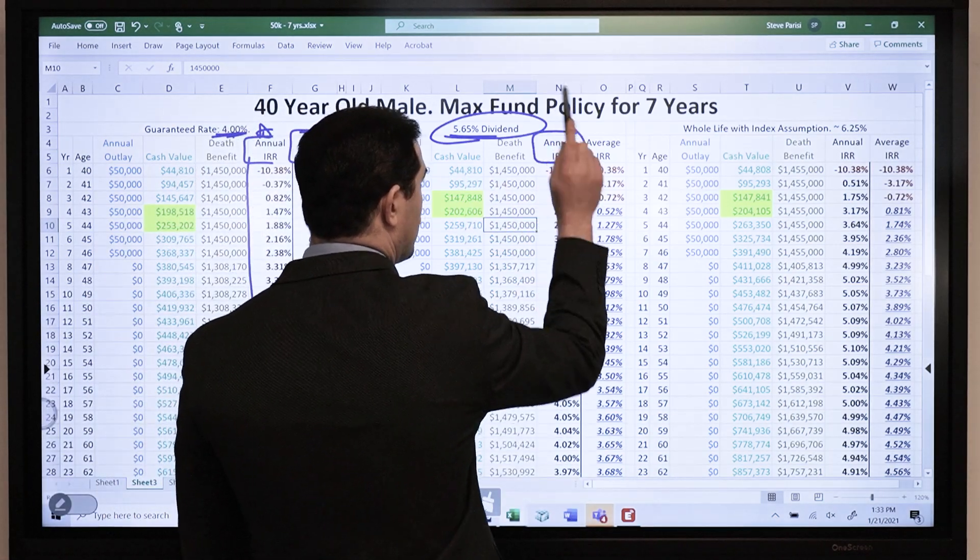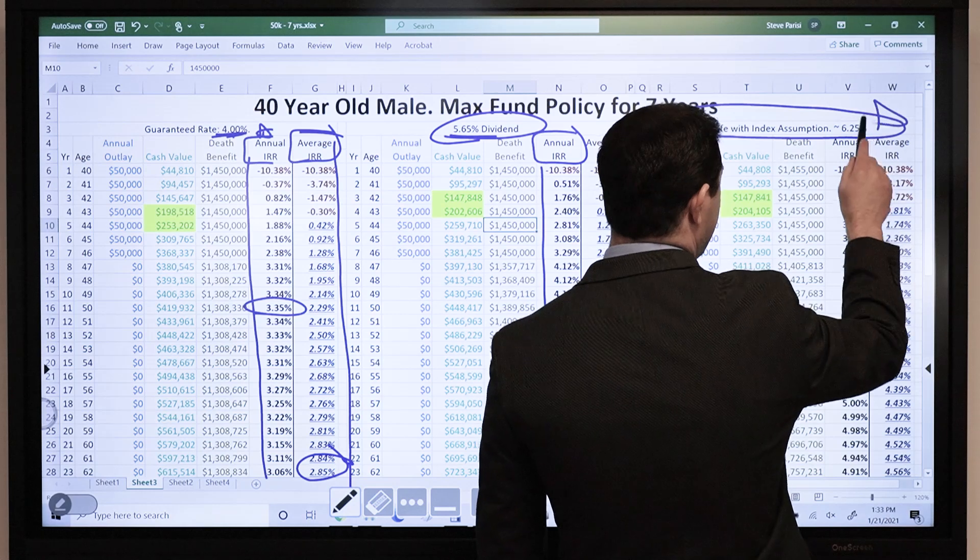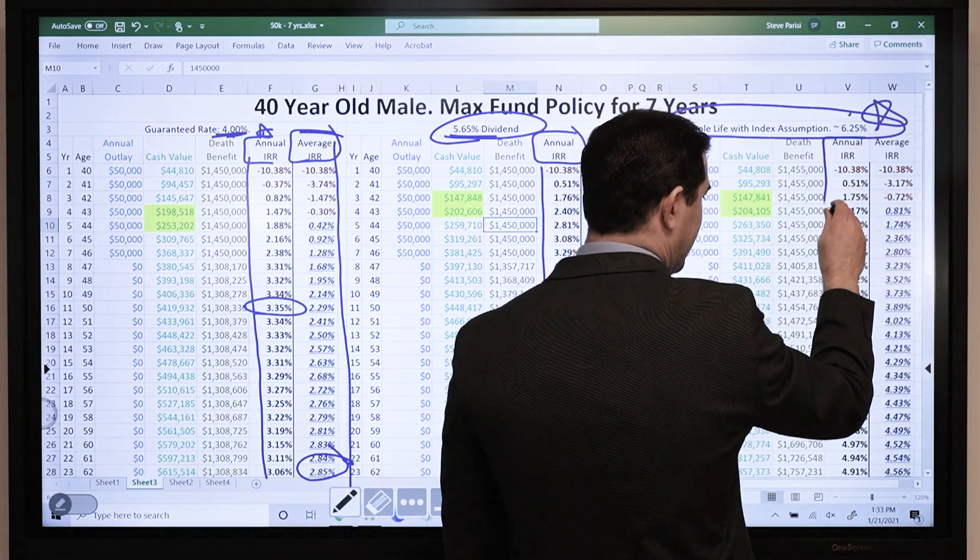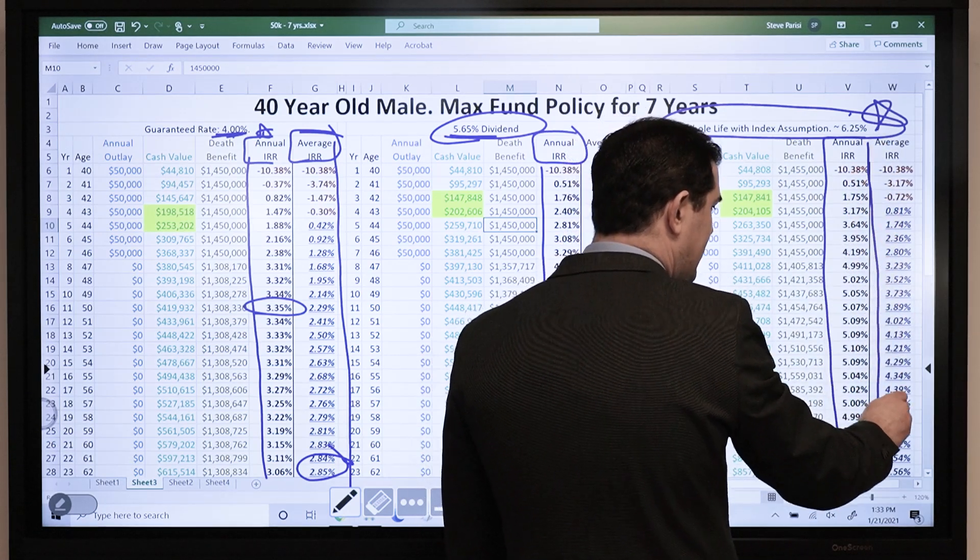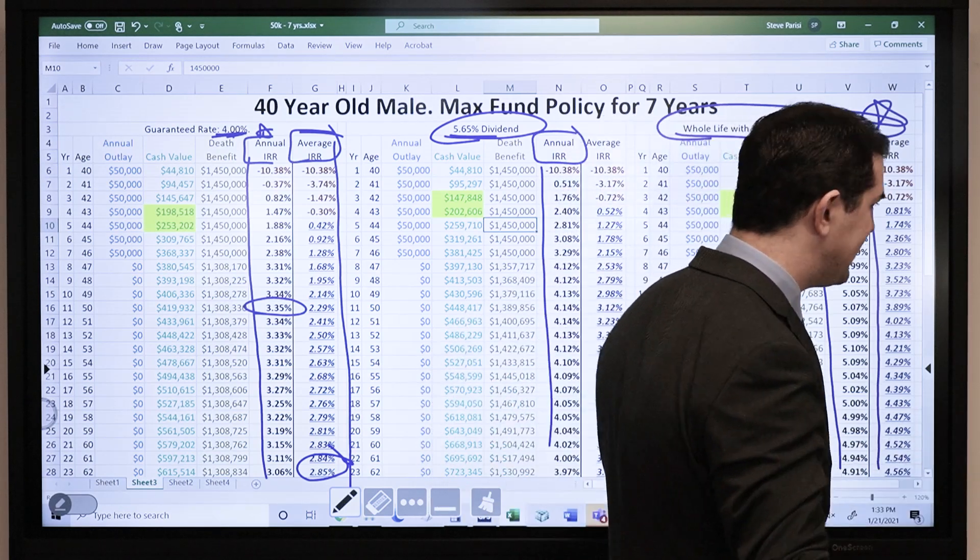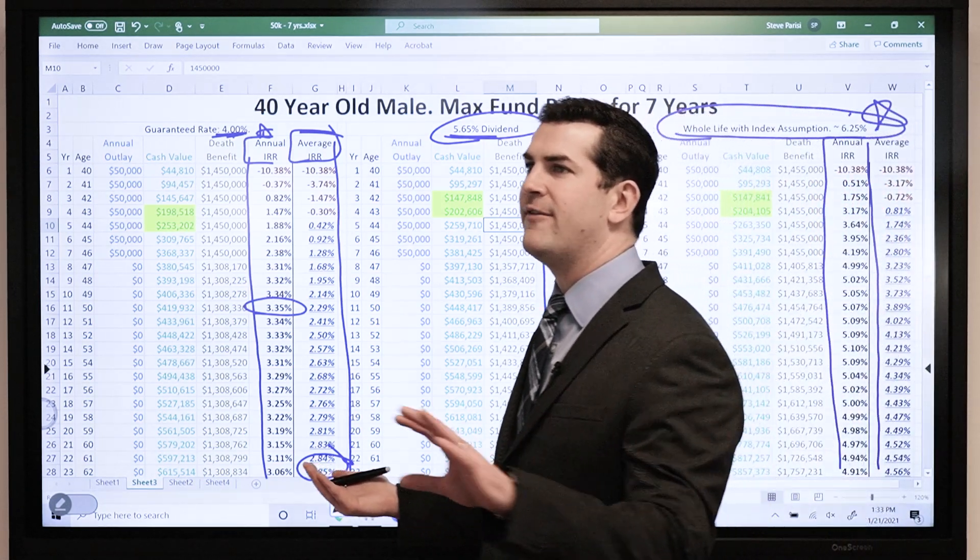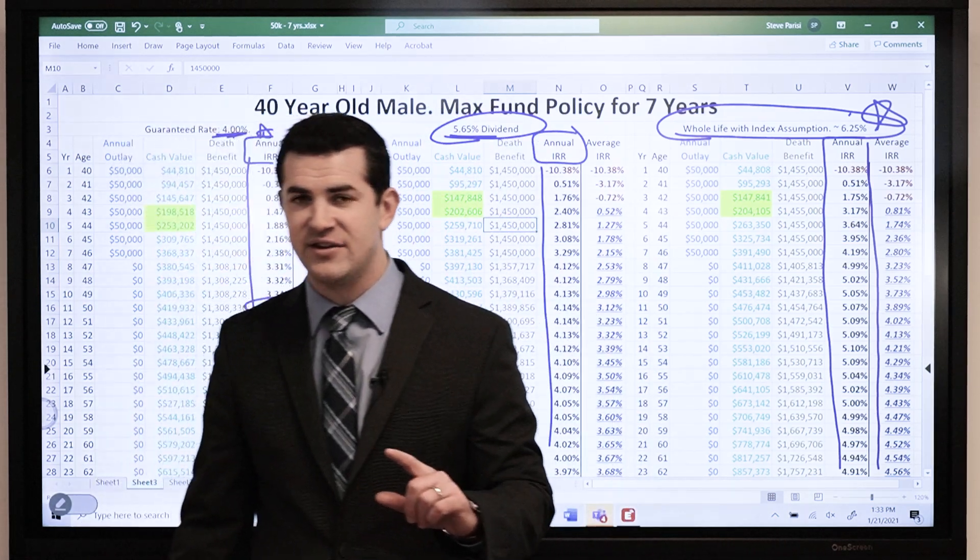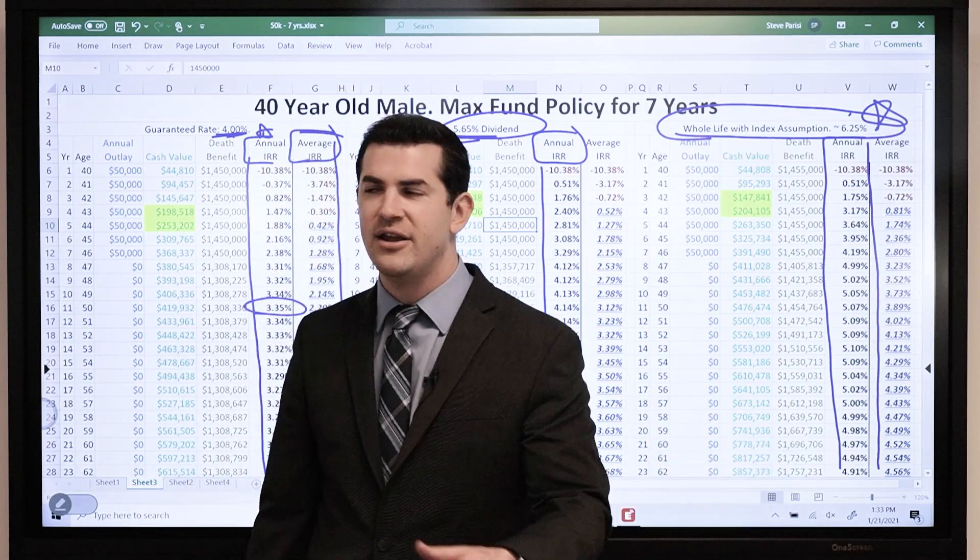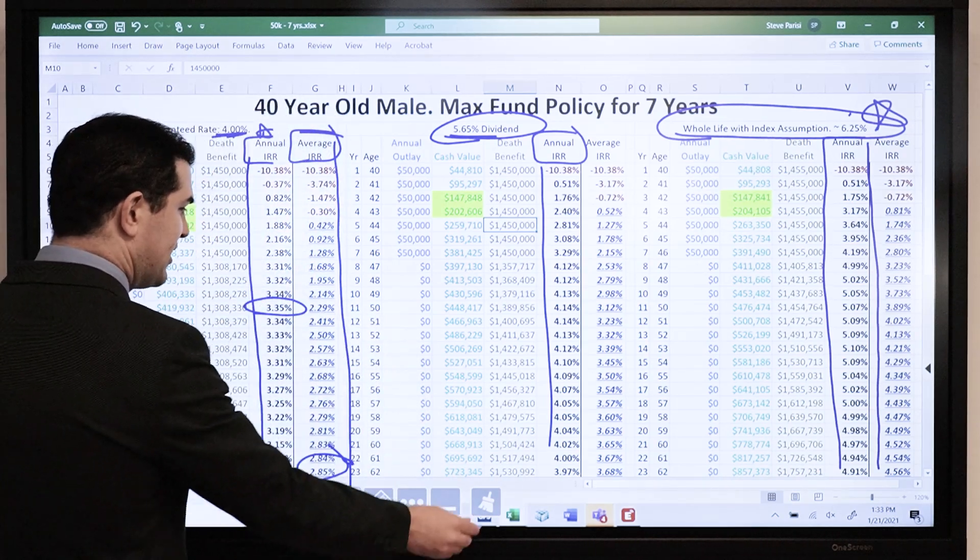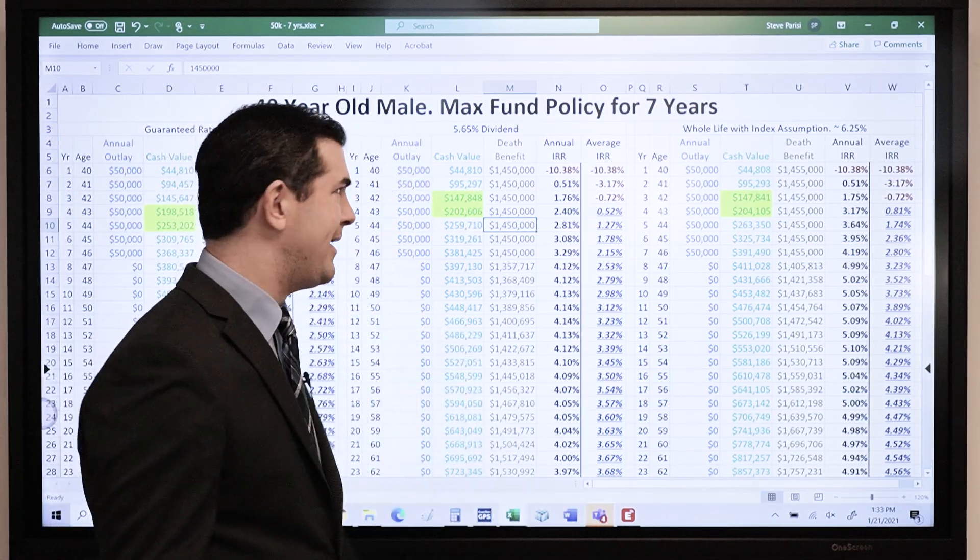We can scroll down further. Same thing with the dividend, a bit stronger. Then we've got the indexed assumption, which by the way could do much better than this, but I don't like illustrating strong rates. That's what happens so much in the insurance industry. So many agents will show the best possible scenario based off of market history. But when you look at actual life insurance policies that have lived the test of time, even when they're well designed, a lot of times they underdeliver compared to what the illustration projected. So it's always good to set expectations properly. If you just show the best numbers and it doesn't deliver, you're going to be upset with me as your agent.